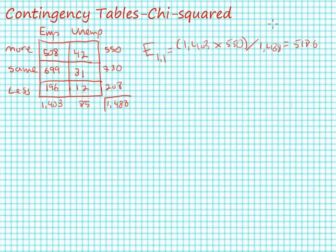So we observe 508 individuals who are employed who think that there should be increased government spending for unemployment benefits. If chance is operating — if these two variables are independent — we would expect to find nearly 519. This isn't a terribly large difference. Let's move on to our next cell.